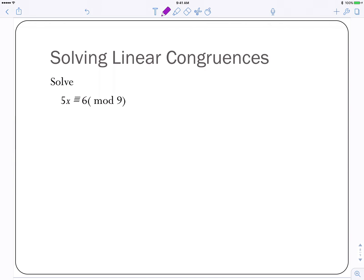So feel free to pause the video if you want to, and see if you can give this one a try. Again, our goal is to get rid of that 5 in front of the X. We'd like a 1 there. So now mod 9, we're thinking of all the things that are congruent to 1. 1 is congruent to 10. And we're going to keep adding 9 until we get to a multiple of 5. I've made these examples pretty straightforward so that we get there quickly. But sometimes you have to add the mod several times. But 10 is 2 times 5.